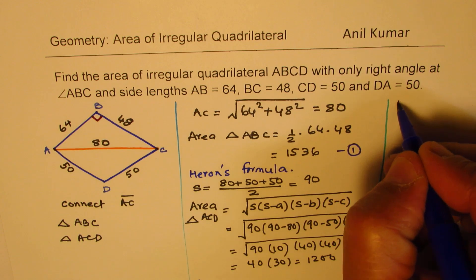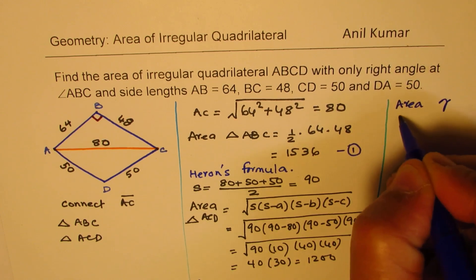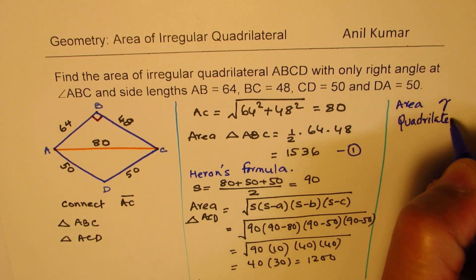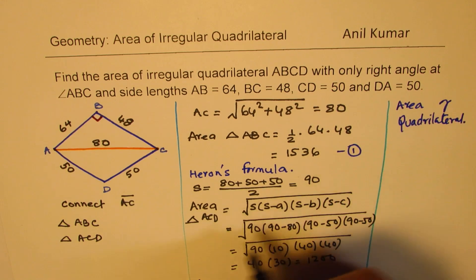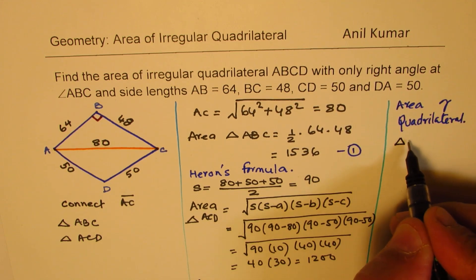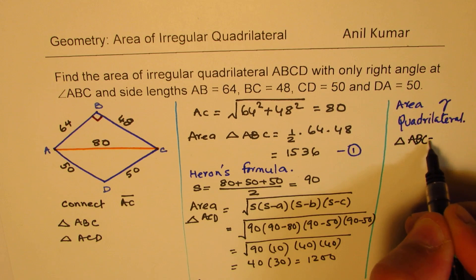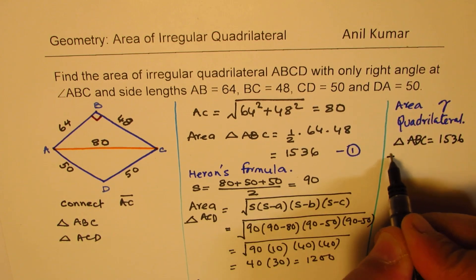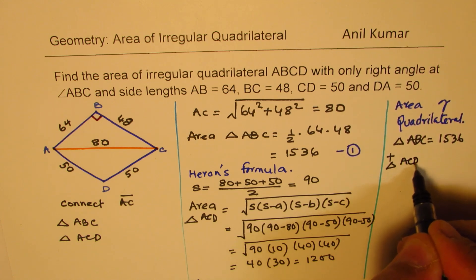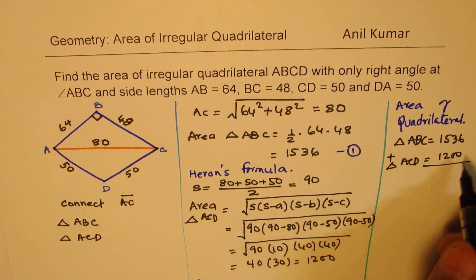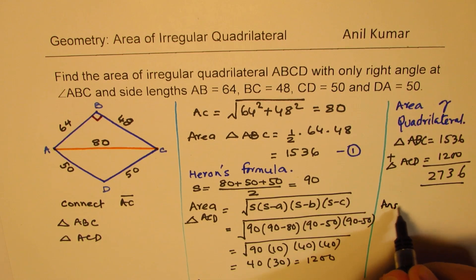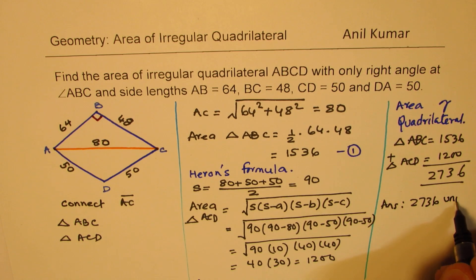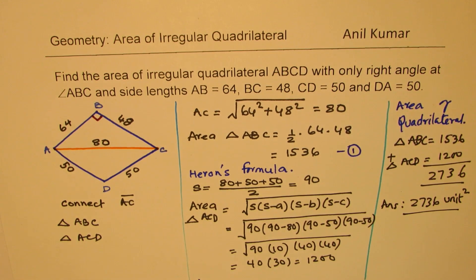Now area of quadrilateral is what? Sum of these two areas. So it is triangle ABC, which is 1536 plus area of triangle ACD, which is 1200. So when you add them, you get 2736. So the answer here is 2736 unit square. So that is how you can find area of this irregular quadrilateral.